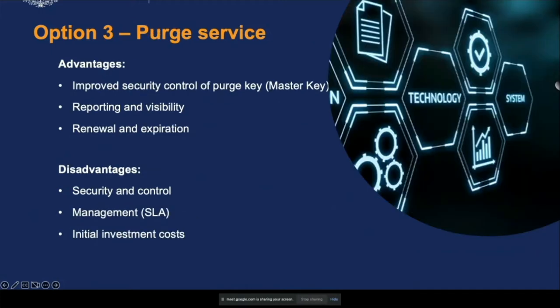Option three - a dedicated purge service. We control the purge key, it purges all sites, clears the cache, gives improved reporting on what sites are being purged, and the renewal/expiration process is simple - just expire the key and add a new one to the service. Disadvantages include security accreditation requirements, managing service SLAs, initial investment costs, and going through the full development lifecycle.